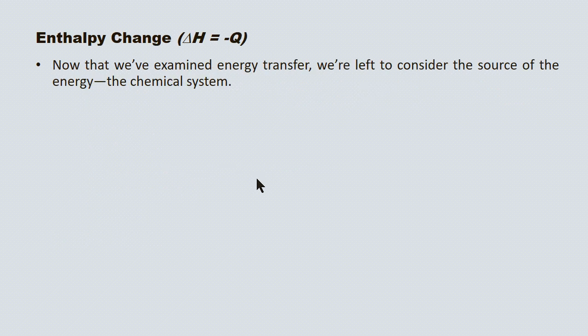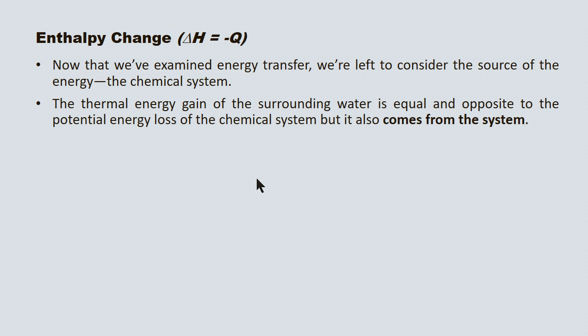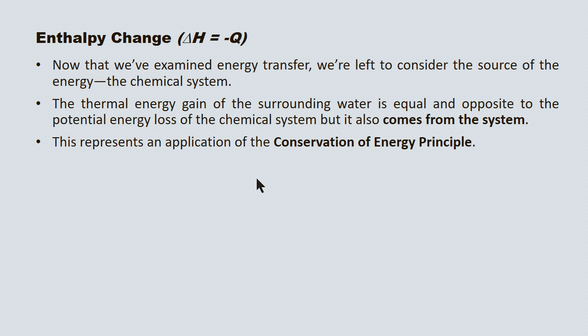We're going to move on now and look at enthalpy change. This is the central piece of the unit. We've talked about how the surroundings gain or lose energy — the question becomes, where does that energy come from? If the surrounding water warms up, that energy must come from the chemical system; the chemical system must be losing that energy. The amount of energy the surrounding water gains must equal the amount of energy lost by the chemical system. That's central to the unit — this is an application of the Conservation of Energy principle.